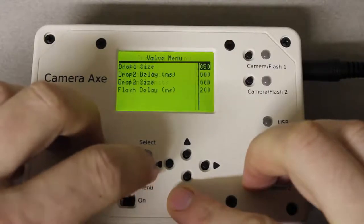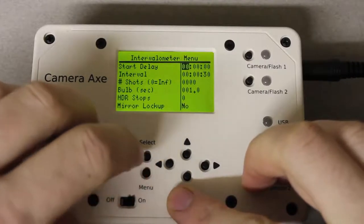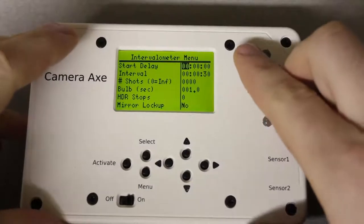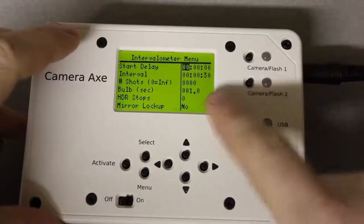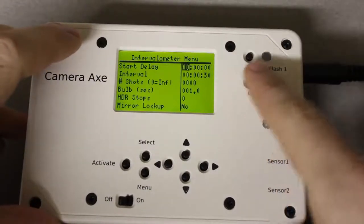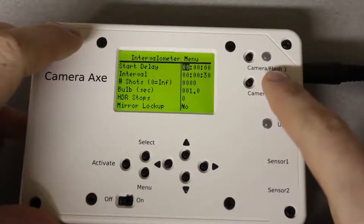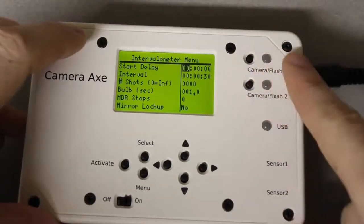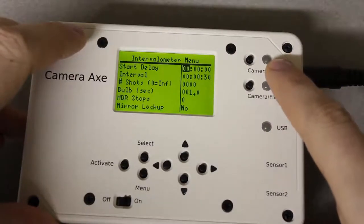Now if we go to the intervalometer menu, this is the menu we'll be looking at today. One thing you can do in any of the menus is if you hit these buttons next to the camera flash ports it will turn this LED on and that means that you're triggering the camera.